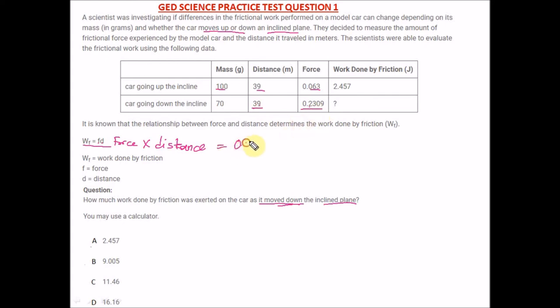The force 0.2309 times 39, and when you use your Texas TI-30 XS calculator, punching these values, you're going to get 9.0051, and when you approximate to three decimal places you're going to have 9.005.